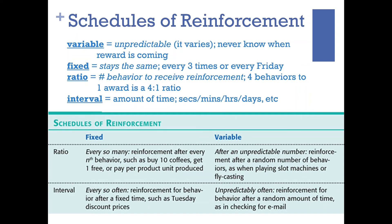Interval is a unit of time — it refers to the amount of time that has passed. Anytime you see a unit of time in a question, it's referring to interval. If it says Tim gave his dog a treat ten seconds after he shook, it's an interval. Interval is always a unit of time — seconds, minutes, hours, days, years. Ratio is a number of behaviors, an actual ratio. For example, every time you buy nine large coffees you get one free — that's a fixed ratio of reinforcement: ten coffees purchased to one award.